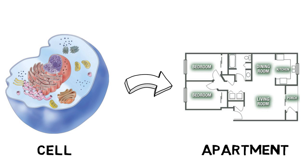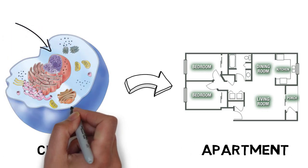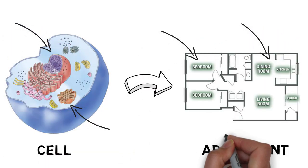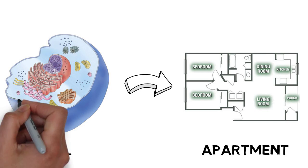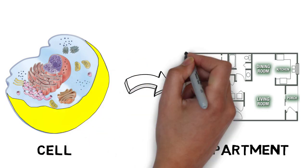For example, each organelle in the cell resembles a specific room within the apartment with a specific function. The cell membrane would then resemble the apartment walls.